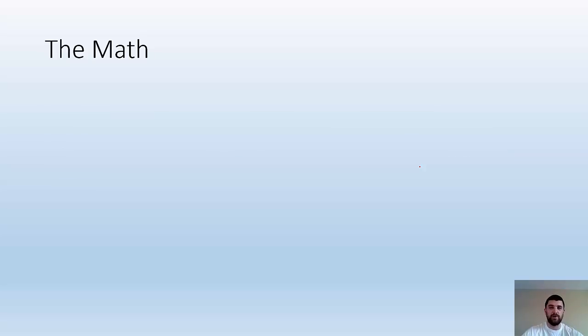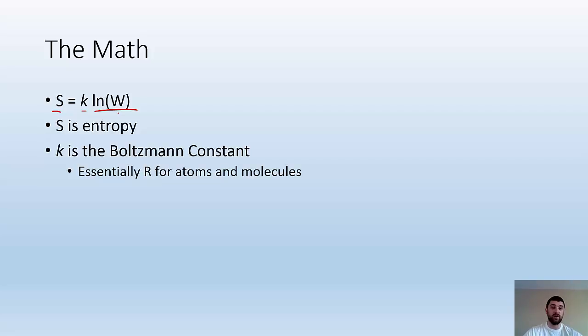Okay, so the math, everybody's favorite part. This is the equation. S (entropy) is equal to k ln(W). What does that mean? Well, S is entropy. K is going to be the Boltzmann constant. It's kind of like the gas constant with gases, but it's for entropy. So it's essentially R for atoms and molecules. This value, 1.38 times 10 to the minus 23 joules per Kelvin, is a constant. W is a number of possible arrangements. So if you want to know the entropy, it's going to be S equals k ln of all of the possible arrangements.